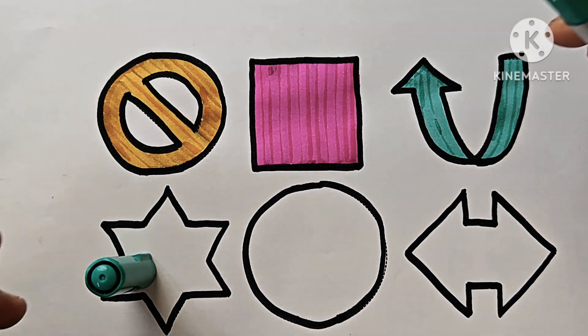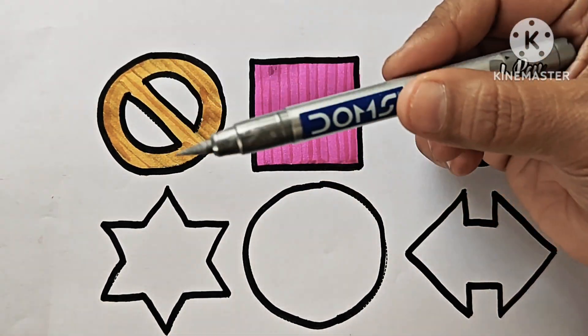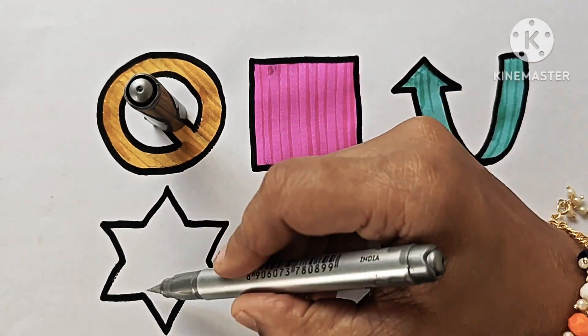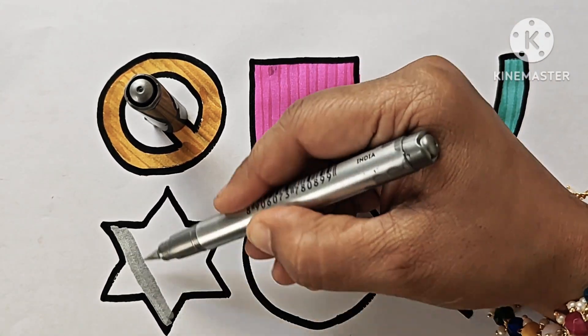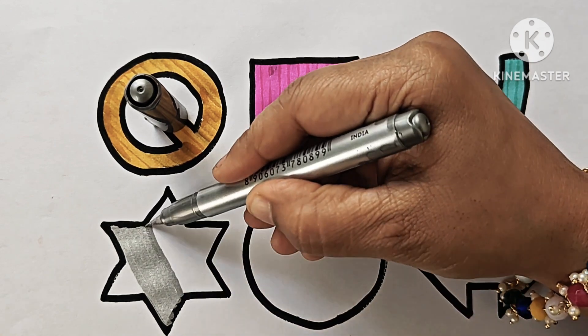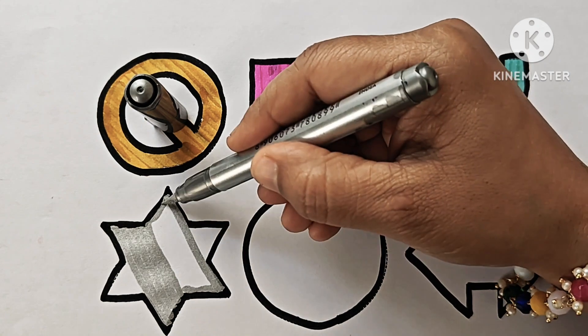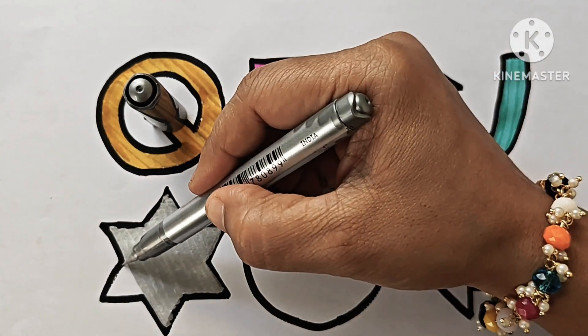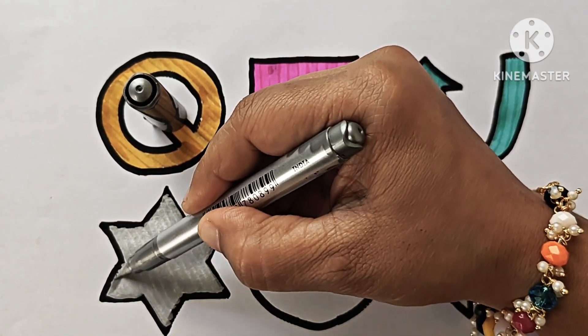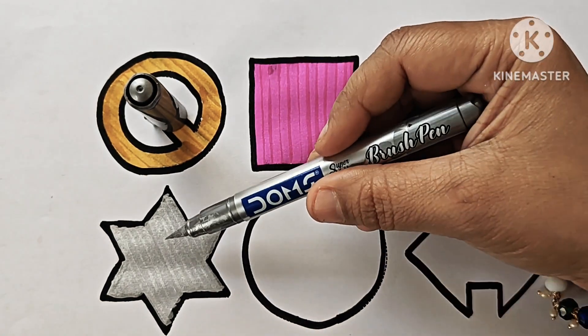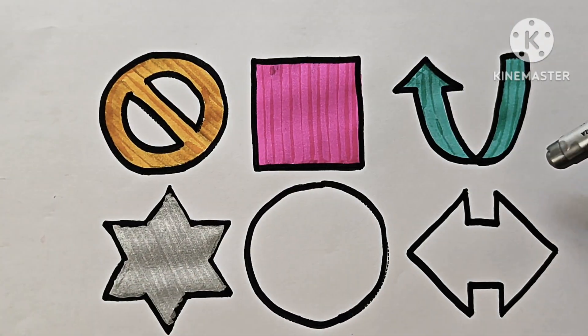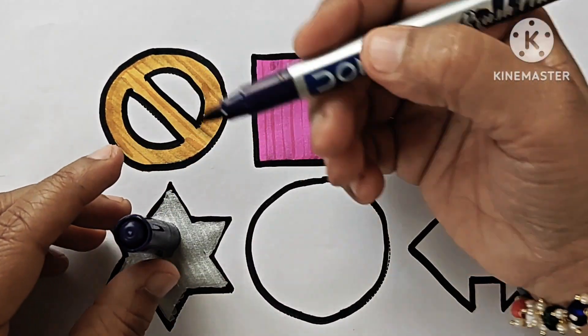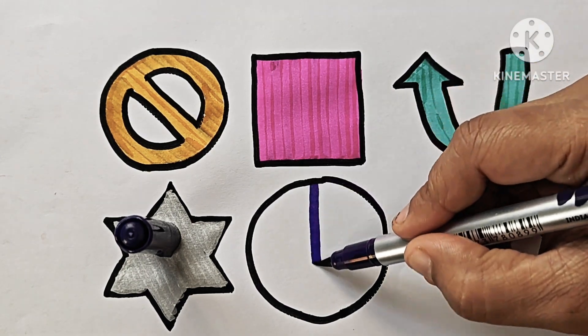Curved up arrow. Silver color. It is six pointed star. It is purple color.